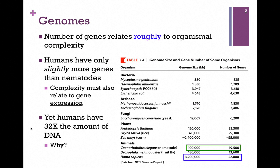In this table from your book, we're comparing the number of genes and genome size with organism, and we find that the number of genes only roughly relates to the complexity of the organism. If we compare Homo sapiens, here in our blue box, with that of the nematode worm, C. elegans, in our green box,